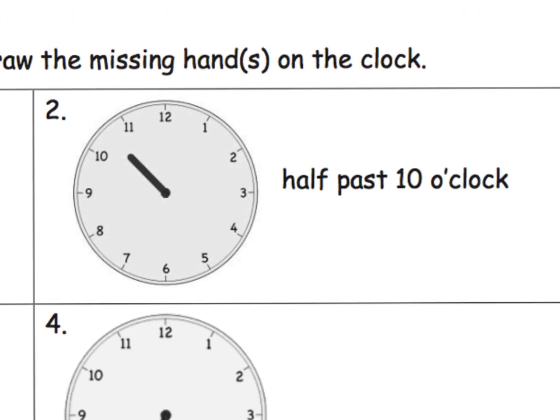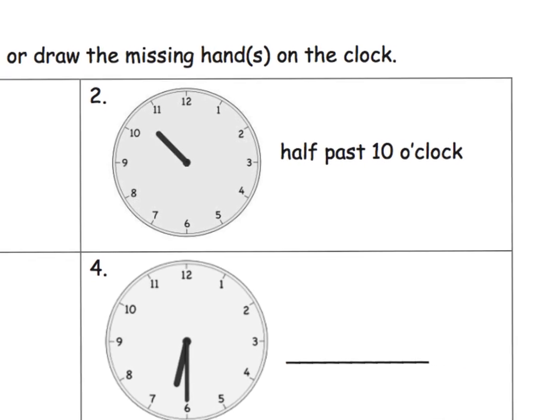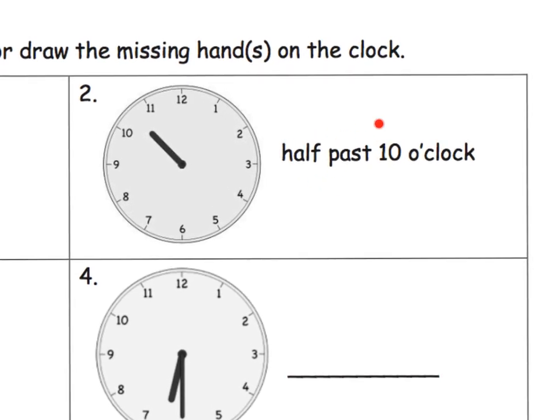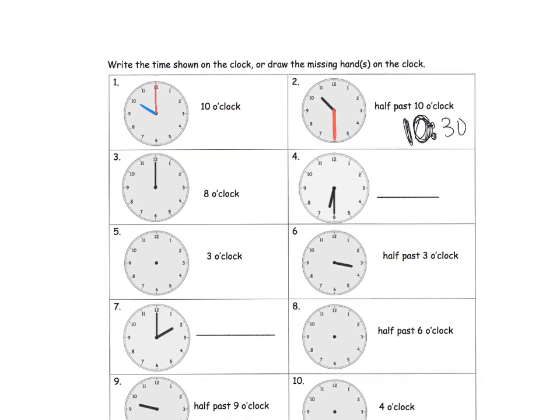Now for problem two, it says we need to draw in the missing hands. It says it's supposed to be half past 10 o'clock. So remember, that's going to look like 10:30, half past 10 o'clock. So we know that the hour hand is going to be somewhere between 10 and 11. And sure enough, that's where the hour hand is. And then for the minute hand, we know it's going to go to the 6. So there is our missing hand.